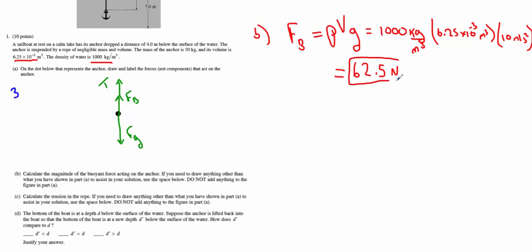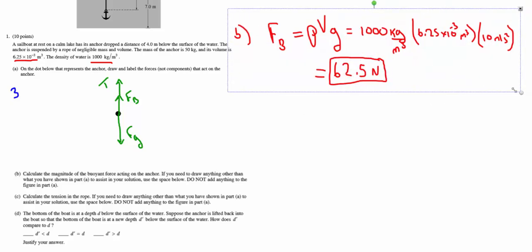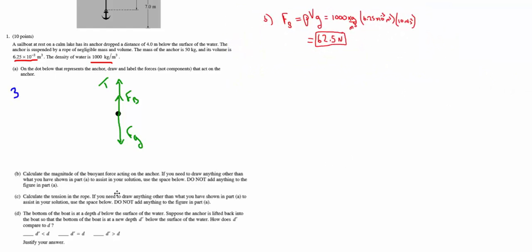Part C: we want the tension in the rope. Don't draw on the diagram you already completed. For this, we'll apply Newton's second law and do a dynamics analysis. The anchor is not accelerating because it's suspended by the rope, so the net force acting on the anchor is zero.